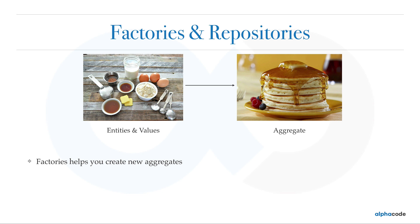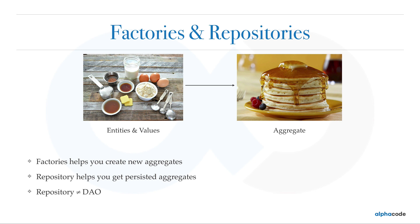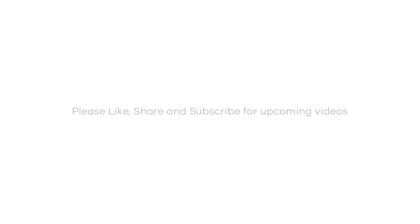Repositories help you get persisted aggregates. In some codebases with 20 entities, people create 20 repositories for all of them — but you should only create a repository for an aggregate, not for individual entities. Repositories are not DAO layers; DAO layers just fetch raw entities, but binding those entities together to create an aggregate is what a repository does. If you've used JPA or Hibernate, you already have built-in repositories — you just use an annotation and you have your repository.